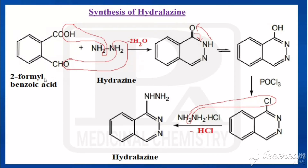So, 2-formylbenzoic acid is treated with hydrazine; one molecule of water is removed here, and one molecule of water is removed there. By the removal of two molecules of water, the compound cyclizes and we obtain this ring. It then undergoes tautomerism — this is the keto form.